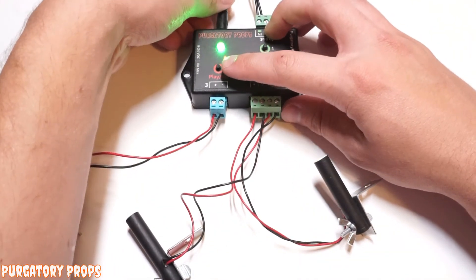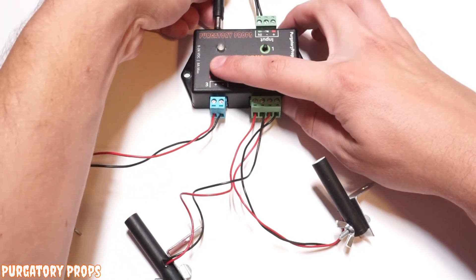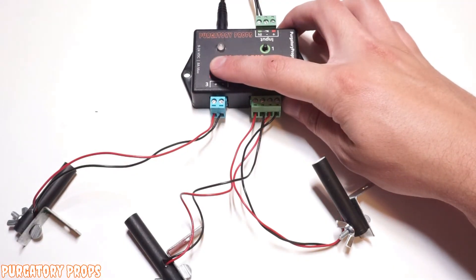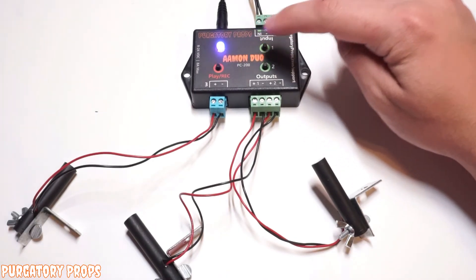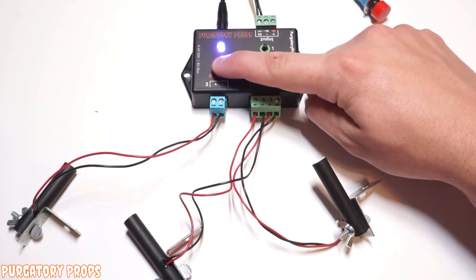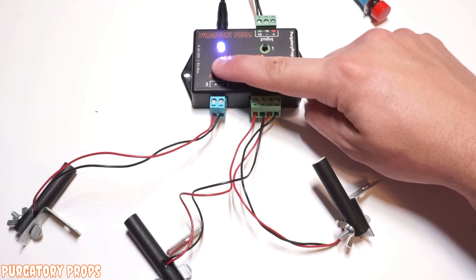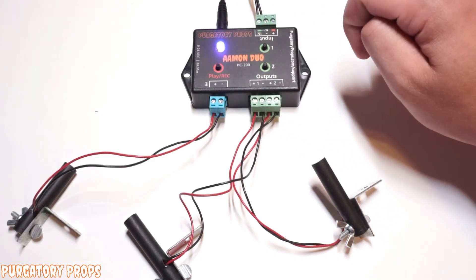If you don't want anyone to mess with your animation, just hold the play record button when turning it on, release when it's red. And now you'll see the purple LED. This indicates that the Amon Duo is in write protect mode. So if I go to record a new animation, you'll see the LED turns off instead of red, indicating that you cannot record an animation.